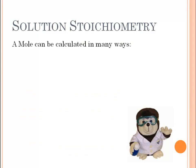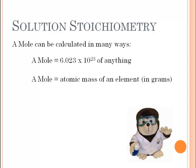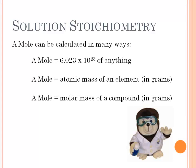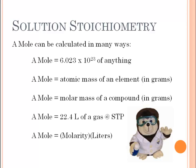Before we begin talking about solution stoichiometry and doing some examples, let's focus on how we can calculate the number of moles of something. A mole equals 6.023 times 10 to the 23rd of anything. A mole equals the atomic mass of an element in grams, the molar mass of a compound in grams, and 22.4 liters of a gas at STP. From our last video, we learned that a mole equals the molarity of a solution times the liters of that solution.